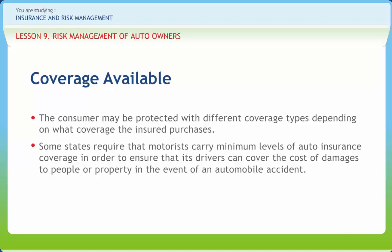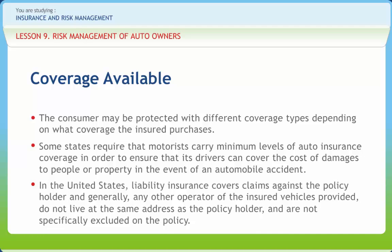Some states, such as Wisconsin, have more flexible proof of financial responsibility requirements. In the United States, liability insurance covers claims against the policyholder and generally any other operator of the insured vehicle, provided they do not live at the same address as the policyholder and are not specifically excluded on the policy. Liability coverage generally extends when you rent a car. Comprehensive or full coverage policies usually also apply to the rental vehicle, although this should be verified beforehand. Full coverage premiums are based on, among other factors, the value of the insured's vehicle. However, this coverage cannot apply to rental cars because the insurance company does not want to assume responsibility for a claim greater than the value of the insured's vehicle.